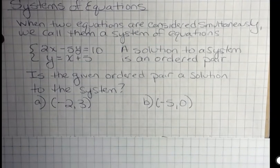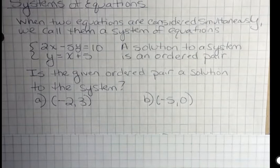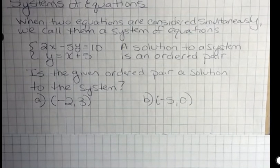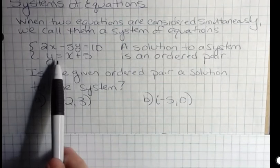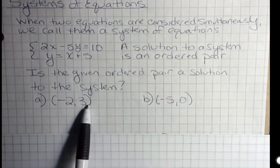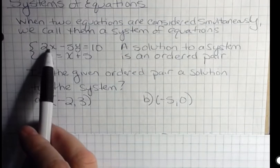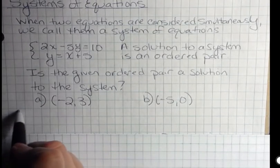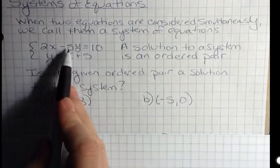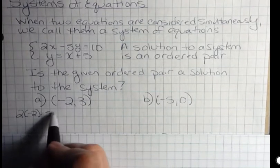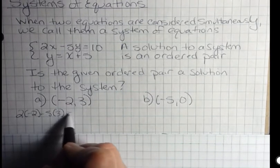So one of the questions you'll be asked is, is the given ordered pair a solution to the system? And this you can do pretty quickly in your head usually. If I'm talking about this system up here, is negative two, three a solution? Well, let's look at this for a second. In the first one I'm going to take where I have x, replace it with negative two, and then negative five times three, that equals ten.